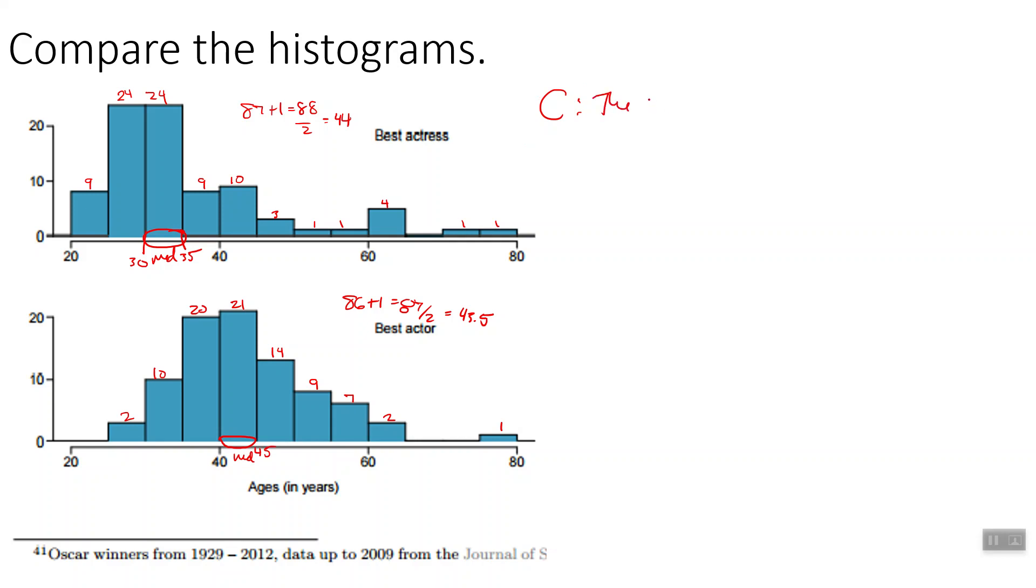So we can say then, to compare them, is the median age of the best actor Oscar is greater than that of the best actress Oscar winners. If you want to be more specific, you can say the men are from 40 to 45. And the women are from 30 to 35.